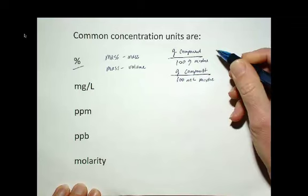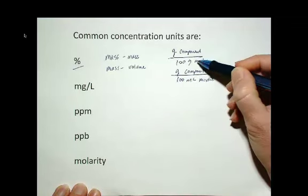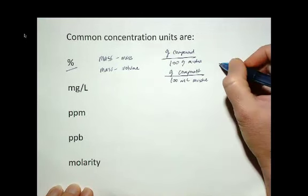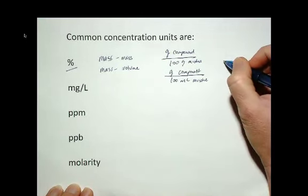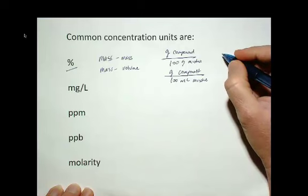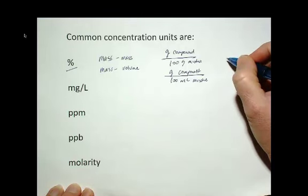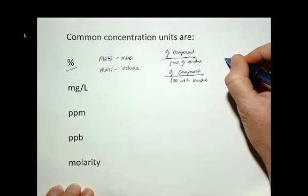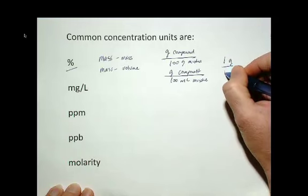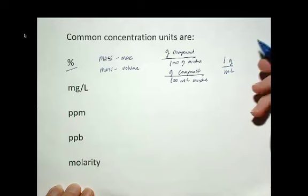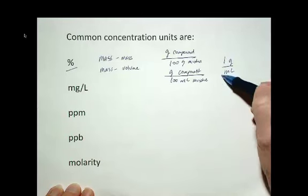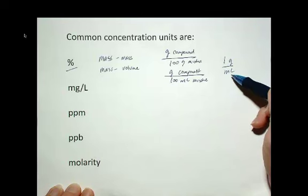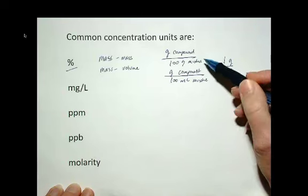And the reason why we can go pretty easily from 100 grams to 100 milliliters is these solutions that we're talking about are water solutions, aqueous solutions. And at normal temperature and pressure, the density of water is one gram per milliliter. And so what that means is one milliliter of water weighs one gram. One gram of water takes up one milliliter of space. So these two would be very, very similar.